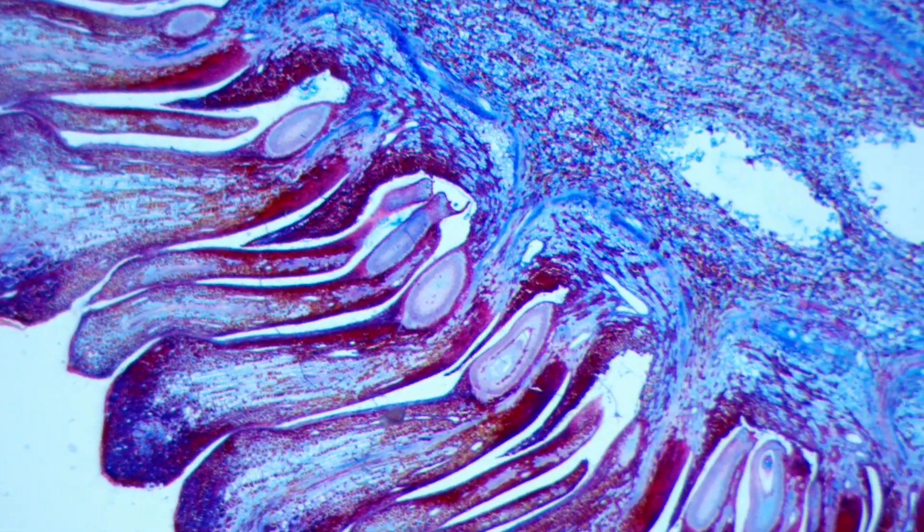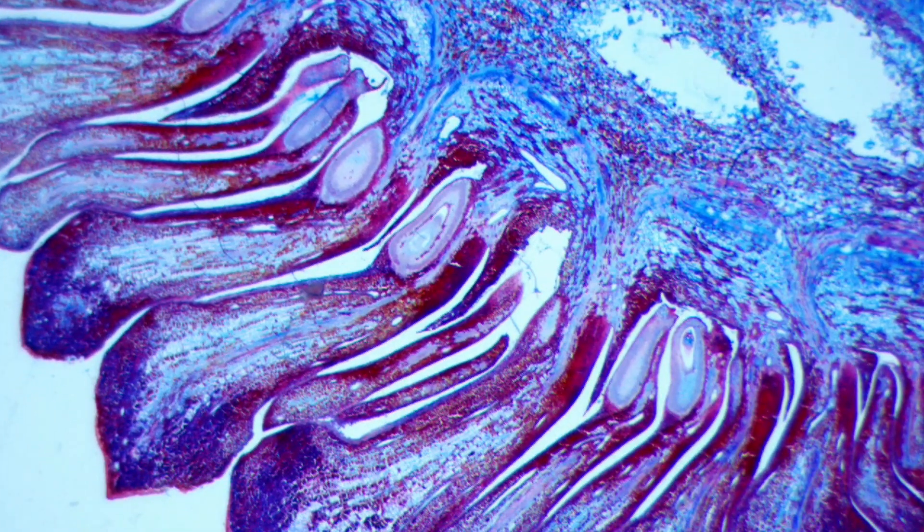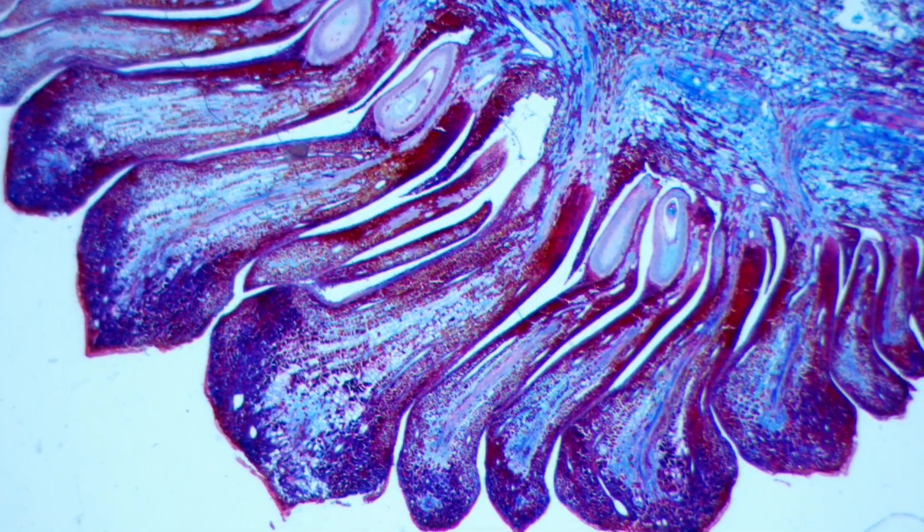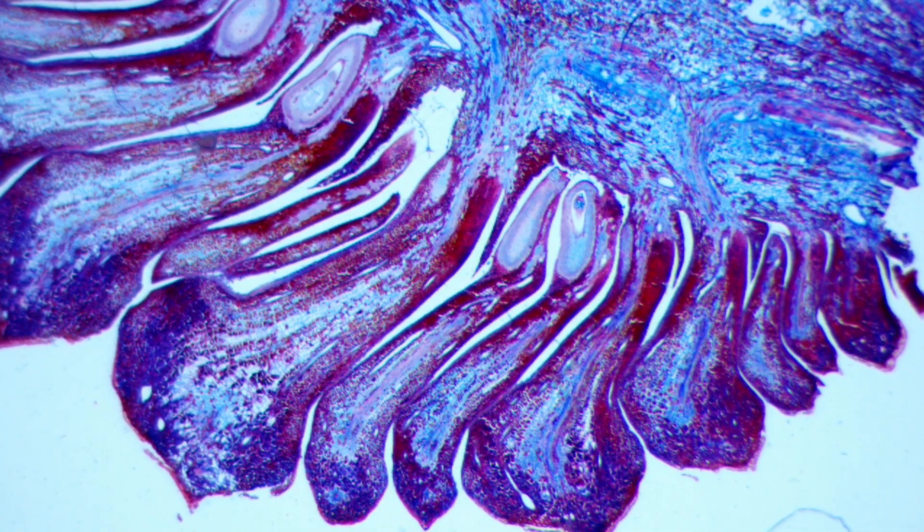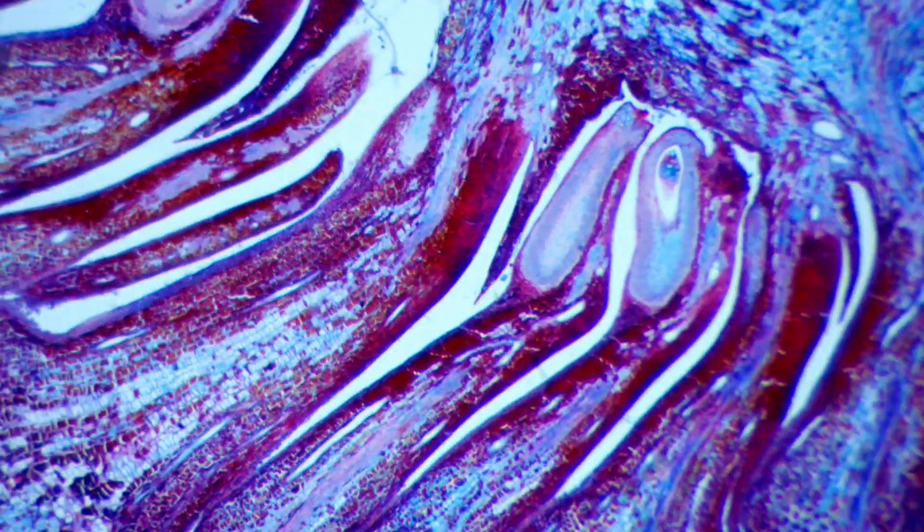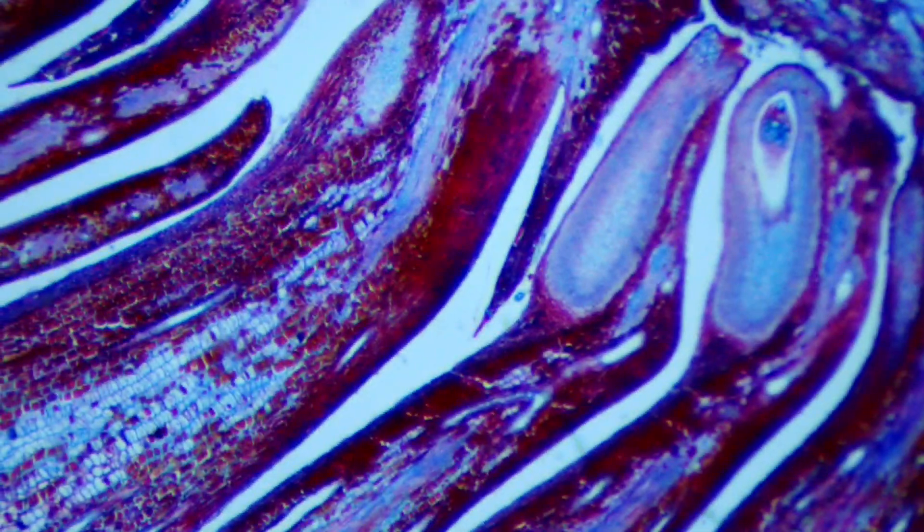Stereo microscopes also allow you to observe transparent objects like microscope slides. I have now turned on the bottom light and we are now looking at the cross section of a pine flower. Again here the microscope camera adjusts its exposure time.